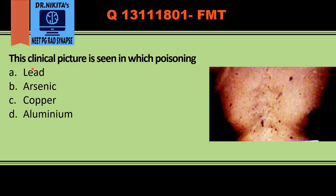The question asks: this clinical picture is seen in which poisoning? This clinical picture shows raindrop pigmentation, which is commonly seen on the trunk and is associated with arsenic poisoning. Today we will be seeing features of arsenic poisoning in a very interesting and easy way to remember them.